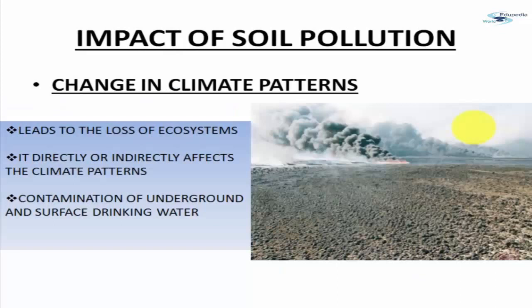Now let's talk about the impacts of soil pollution. The first impact is change in climatic patterns. Because of acid rain, life on the earth's surface and even marine life get affected. Everything — land, water, and air — is contaminated and nothing is pure. This kind of pollution is ultimately changing our climate, because the entire ecosystem is being contaminated.